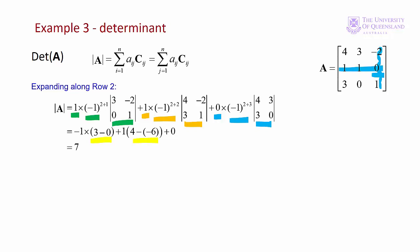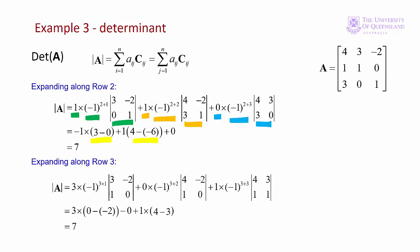So A is non-singular and our system of equations has a solution. Since there's also a 0 in row 3, we can expand along that row as well. We have elements 3, 0, and 1. Of course we get the same value for the determinant, 7. Either expansion would be suitable — you can expand along rows 1, 2, or 3, or if you prefer, use Sarrus' rule to find the determinant.